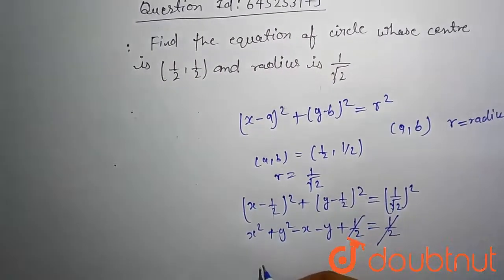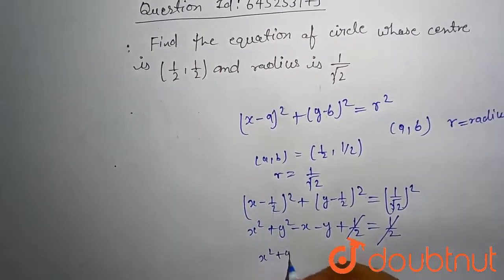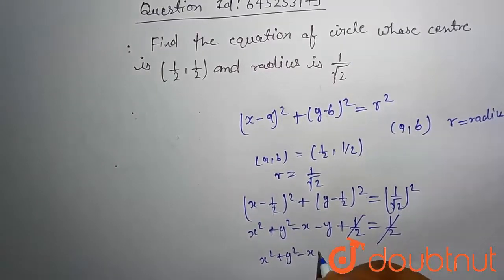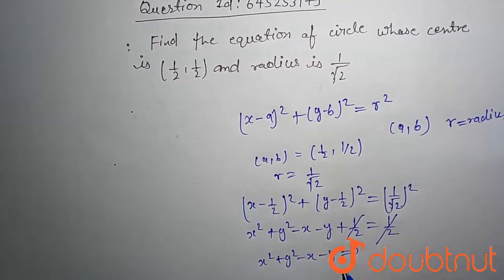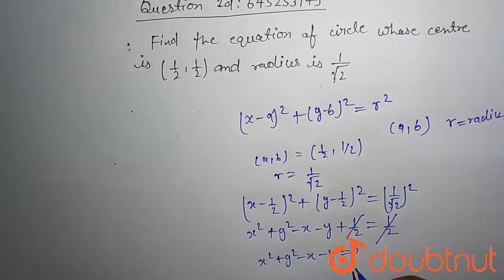Then our final equation is, x square plus y square minus x minus y equal to 0. This is our circle equation. This is our final answer. Thank you.